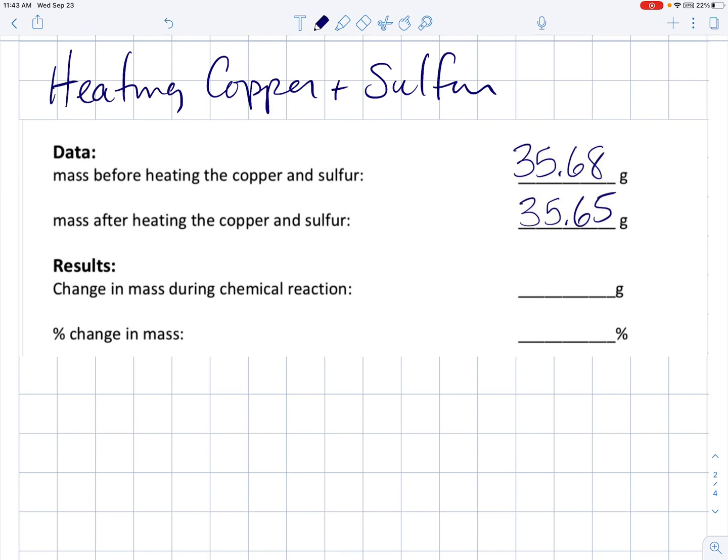So in this experiment we had a test tube that had some copper metal in it and some sulfur powder, yellow sulfur powder. We capped the test tube with a rubber dam that could expand or contract and then we heated the test tube in a small Bunsen burner flame for about a minute. During the heating the sulfur turned from a yellow powder to a bright red liquid, a dark red liquid.